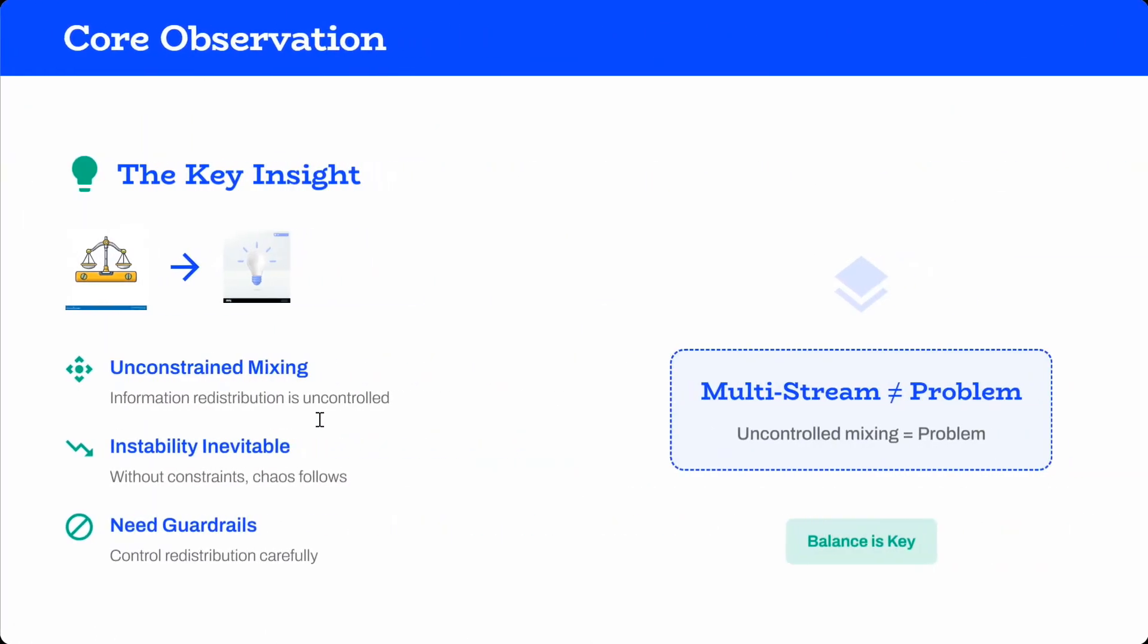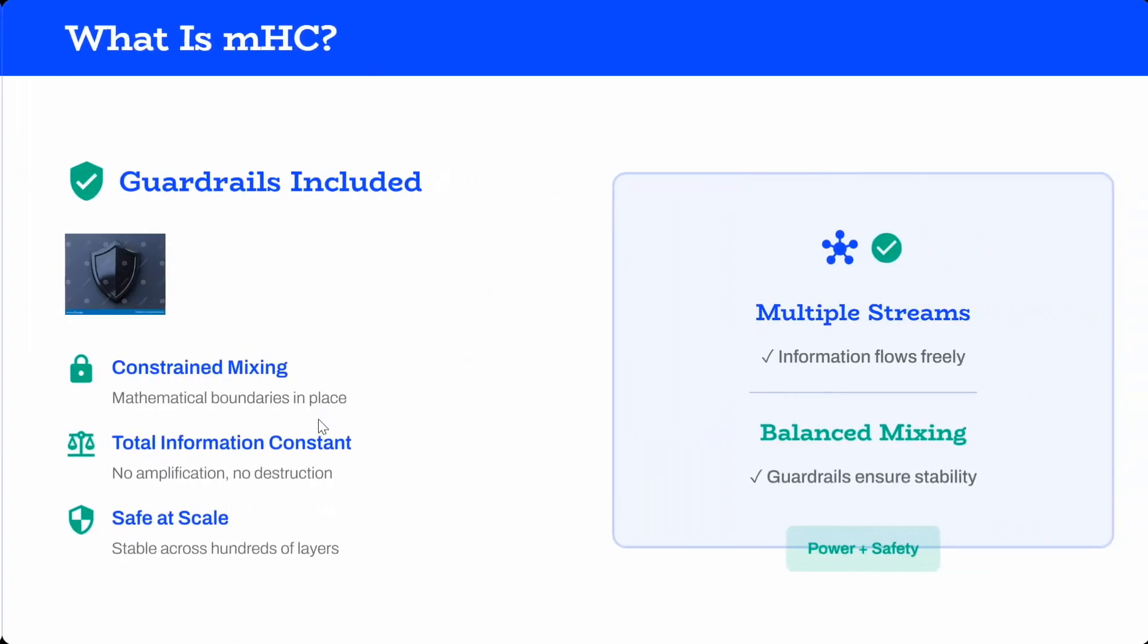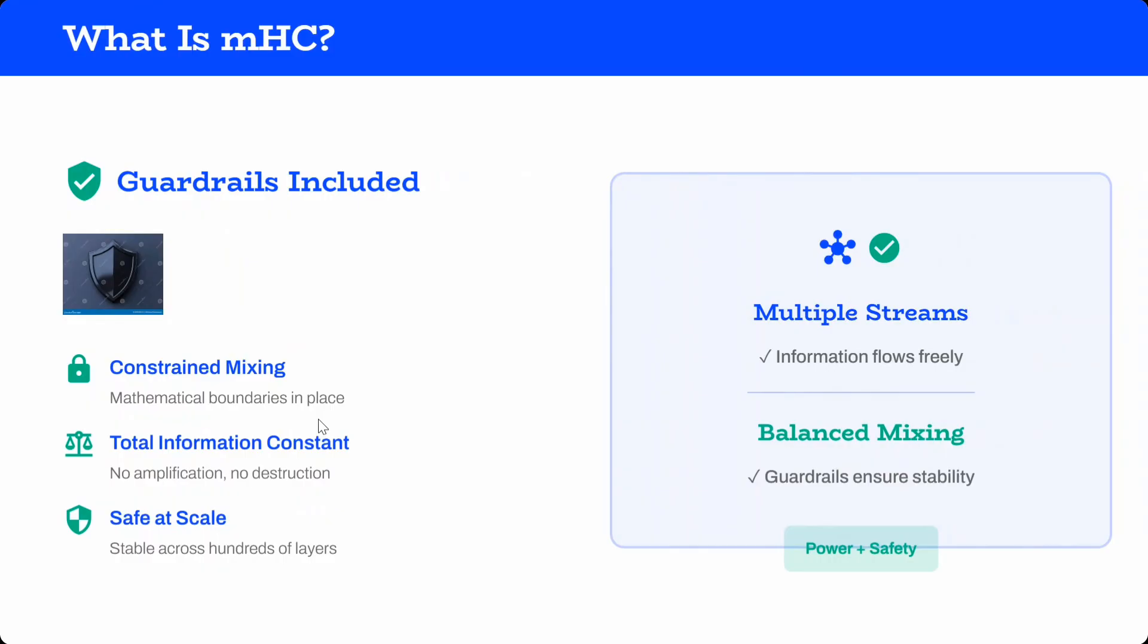Core observation - the key insight: unconstrained mixing is happening. At any scale you're mixing it, it might be the case that the previous output after transformation becomes very, very big. In that case it's hijacking the entire update. Instability is inevitable and you need guardrails - it needs clipping, it needs some constraints.